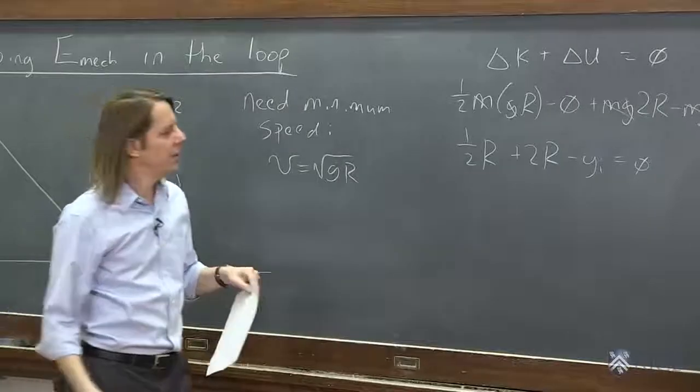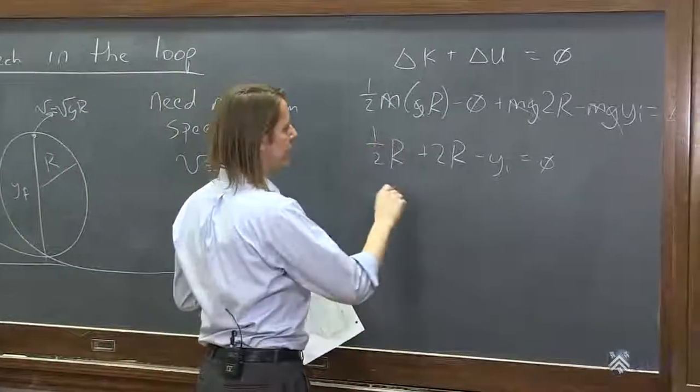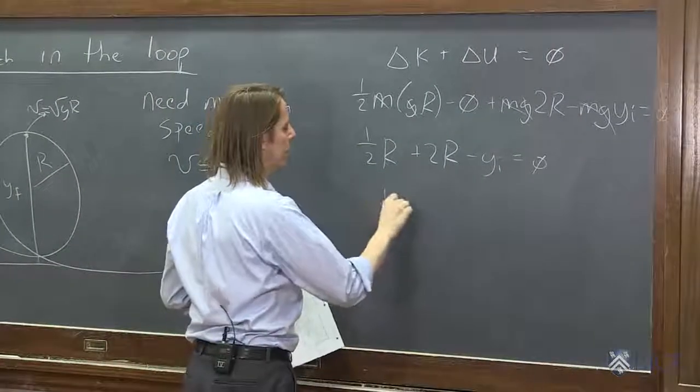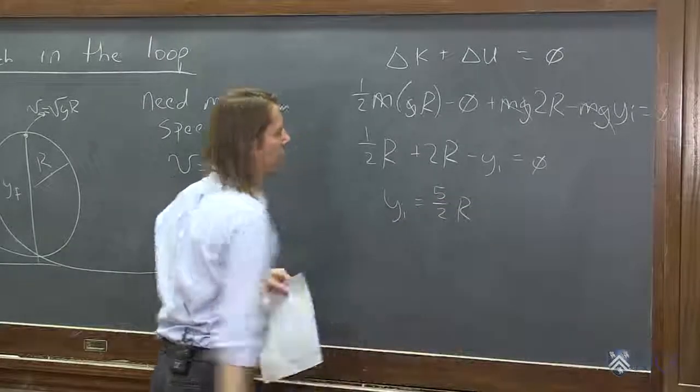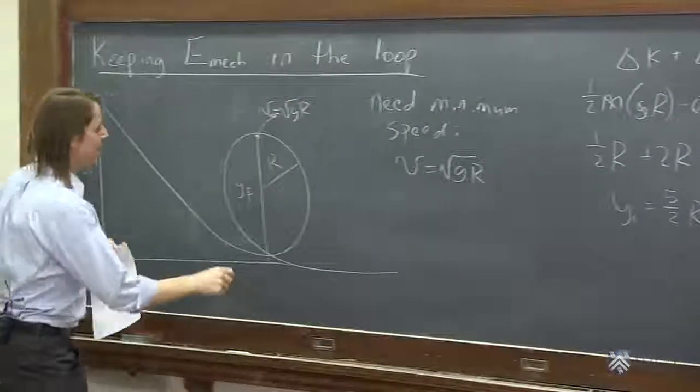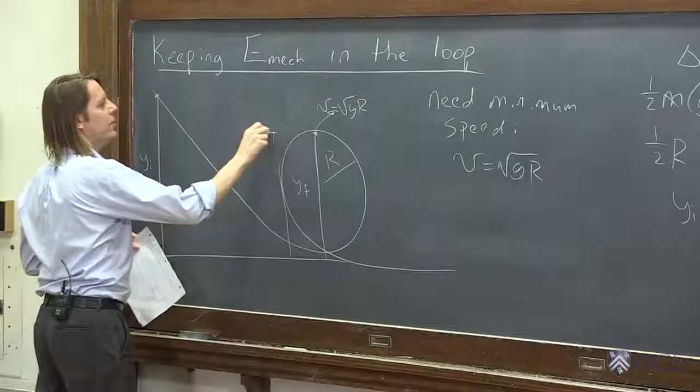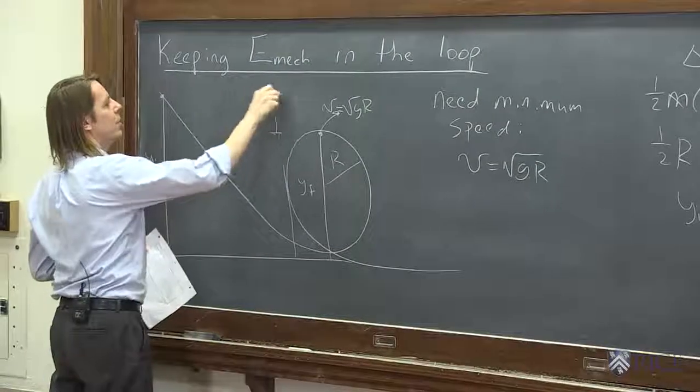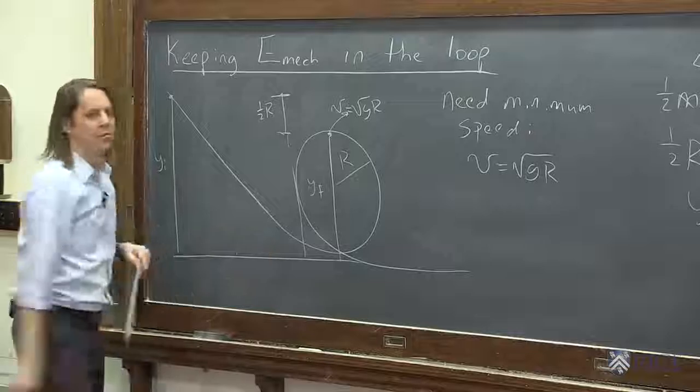So right away, you see that y is 3 halves r, or is 5 halves r. y i is 5 over 2 r. Or you could think of it as, it's 2 r, the diameter of the circle, and it's another half of r above, above the top.